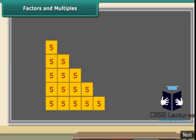It is clear from the figure that the numbers 5, 10, 15, 20 and 25 are multiples of 5. Each of these numbers is greater than or equal to 5.